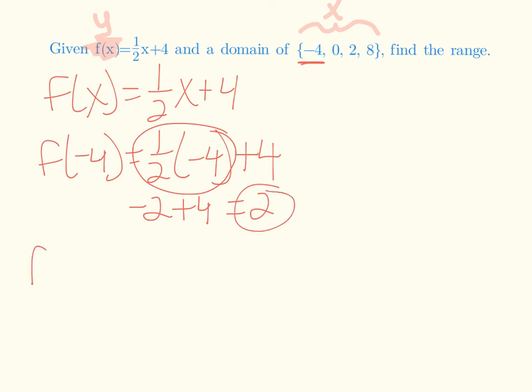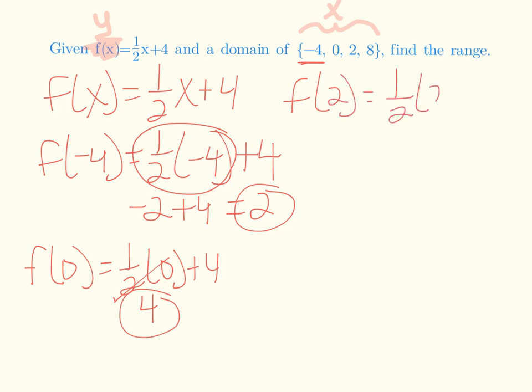So now I'm going to do 0. So F of 0 equals 1 half times 0 plus 4. So half of 0 is 0 plus 4. Now we're going to do the 2. 1 half. Now I'll replace the X with a 2. So half of 2 is 1 plus 4 is 5.